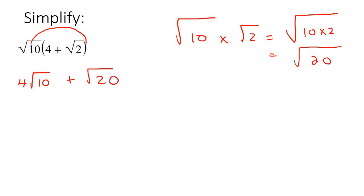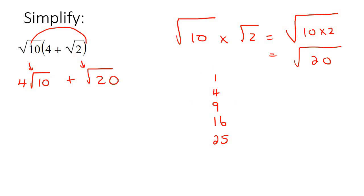Now we need to simplify. Like in one of the previous lessons, I showed you how to simplify radicals. Because these are square roots, we look at all the square numbers. So 1×1=1, 2×2=4, 3×3=9, 4×4=16, 5×5=25. So can you take the number 10 and use any of these numbers? Well, you can't — 10 can only be written as 2 times 5, but that's not any of these.